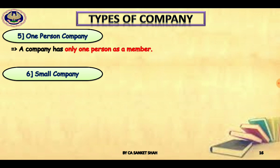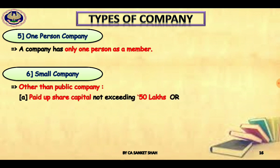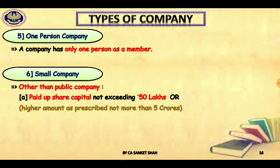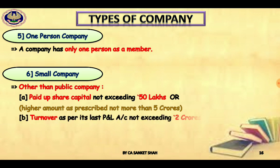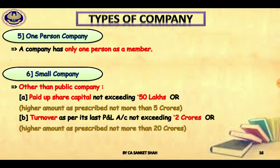Small company is also a new concept. The minimum capital of a private limited is one lakh, but for a small company the paid-up share capital should not exceed 50 lakhs — though a higher amount can be prescribed but not more than five crores. The turnover limit for a small company is less than two crores, and a higher limit can be prescribed but not more than 20 crores.